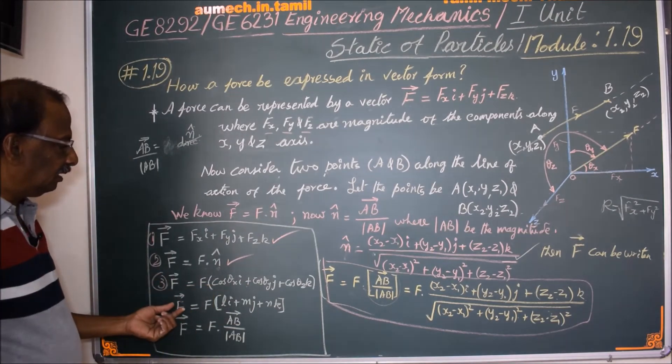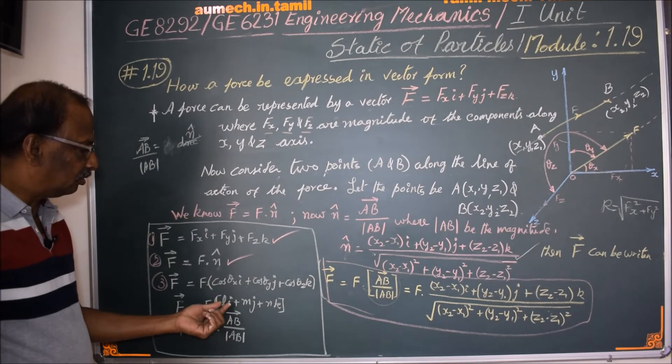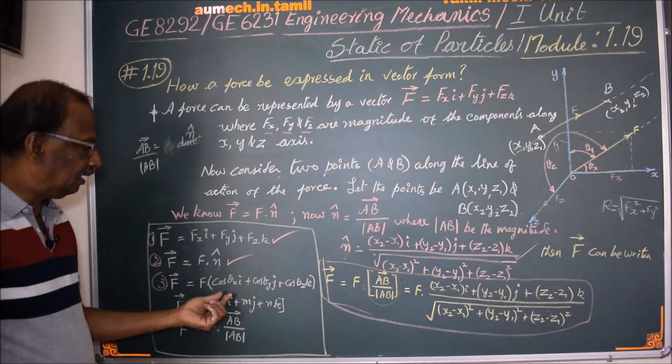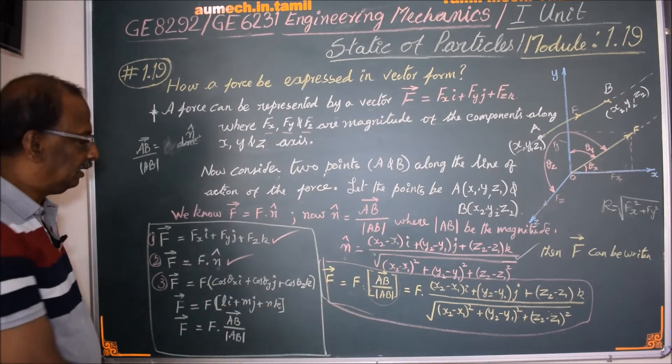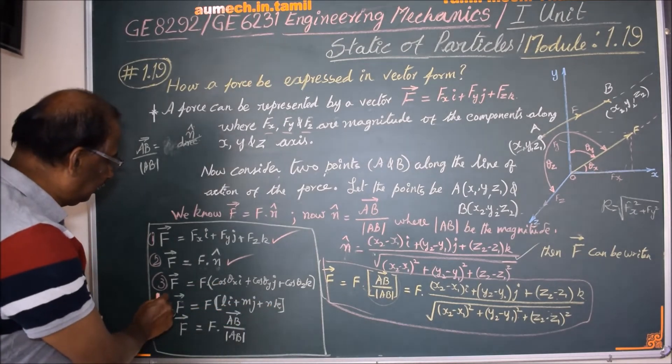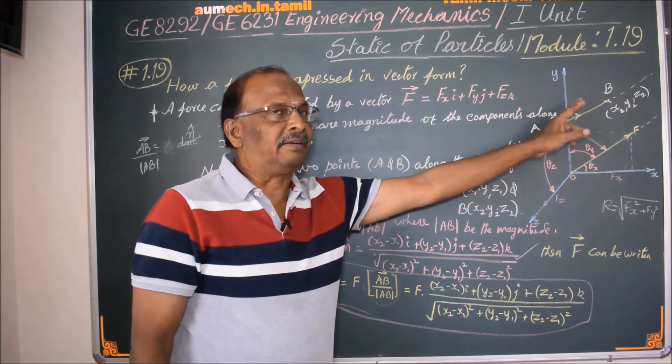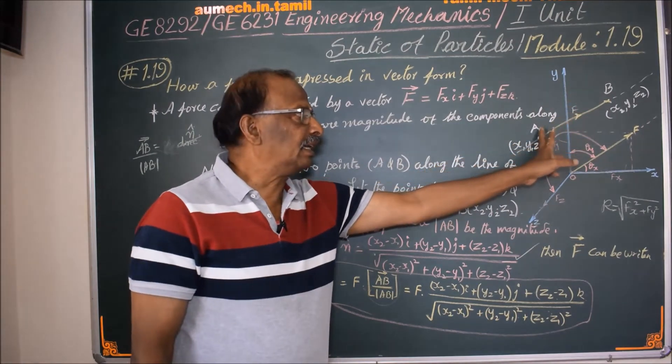The third method uses the direction cosines of the force, and the second method uses l, m, n. The second method uses the two points on the line of action, and the third is F into AB over modulus AB.